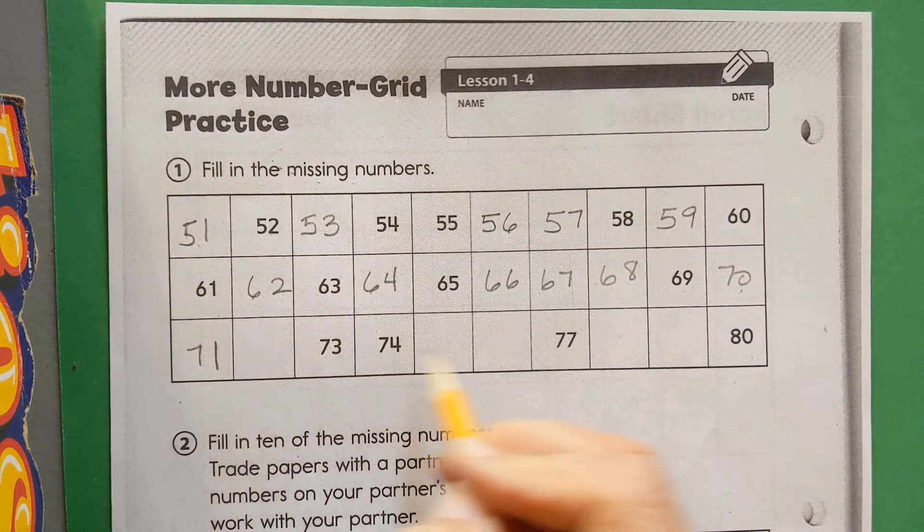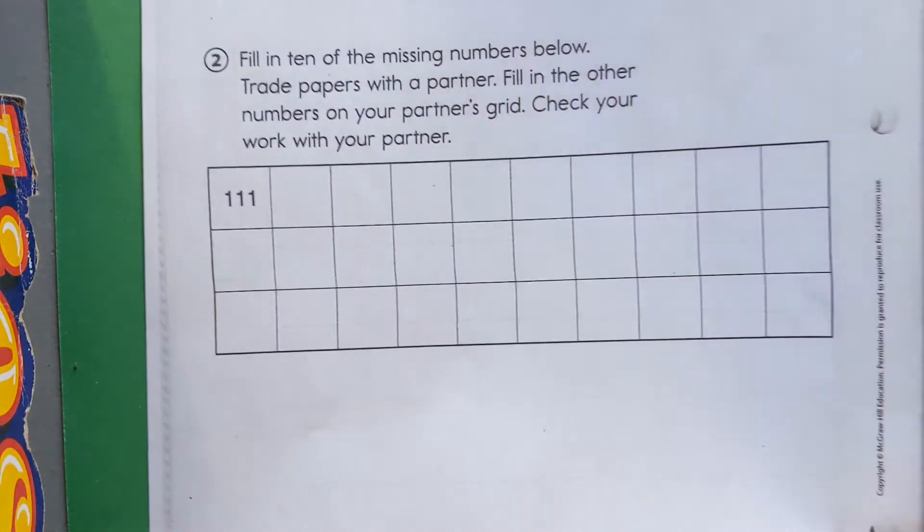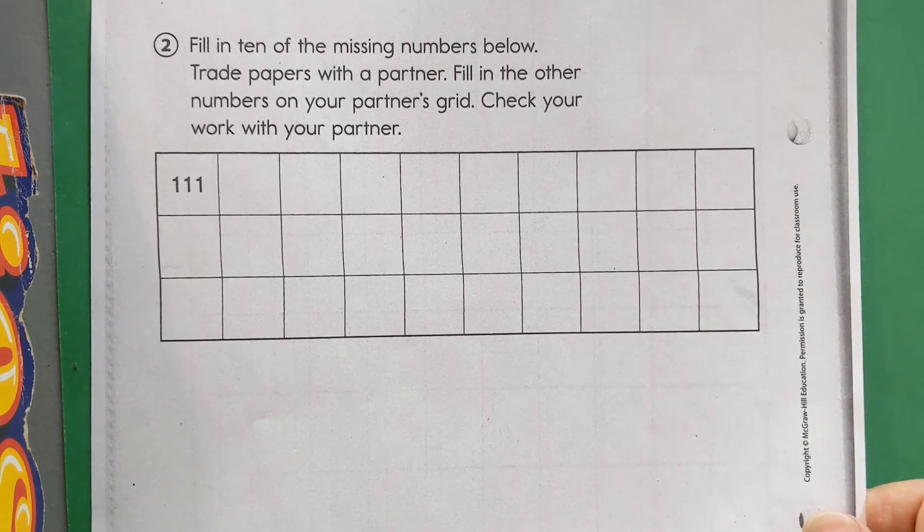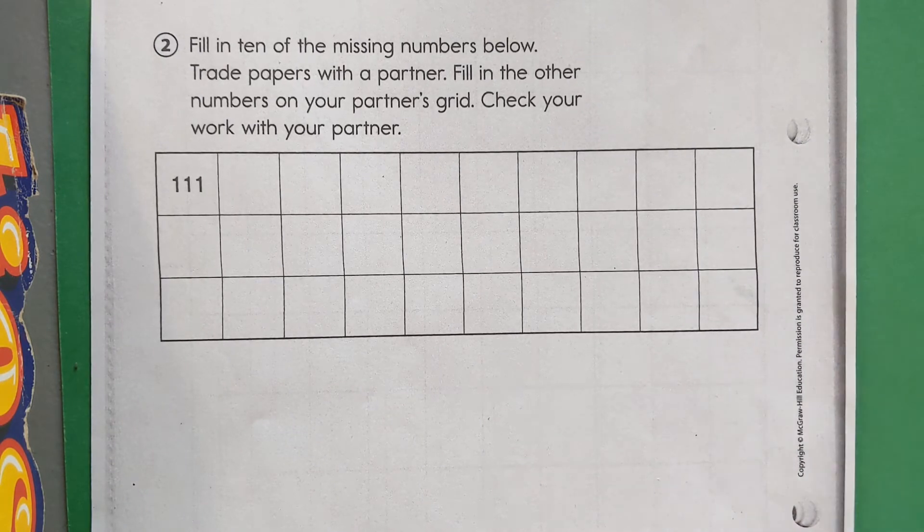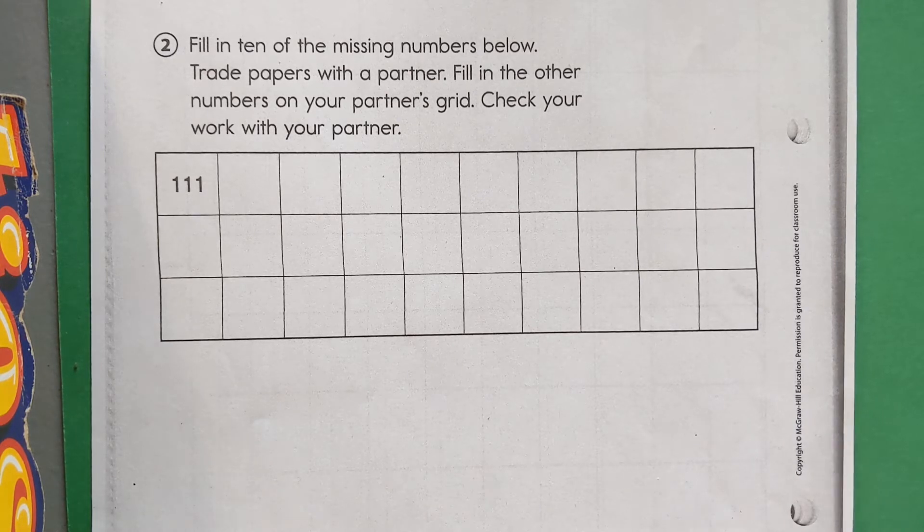And I bet you can finish it on your own. I'm going to go on to the bottom. You can pause if you want to finish that. So it says fill in 10 of the missing numbers below, trade papers with a partner, but we're not going to do that. I'm going to have you fill in the whole thing.